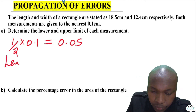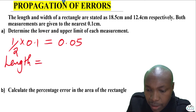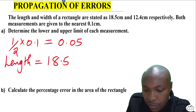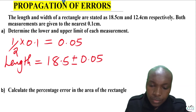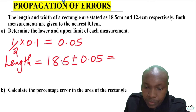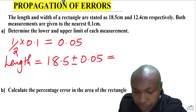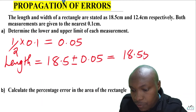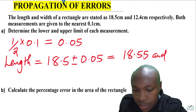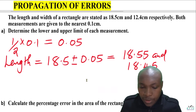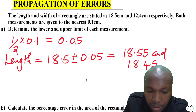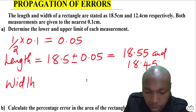For the length, it will lie between 18.5 plus or minus 0.05. Adding gives the upper limit of 18.55, and subtracting gives the lower limit of 18.45. Those are both the upper and lower limits for the length.